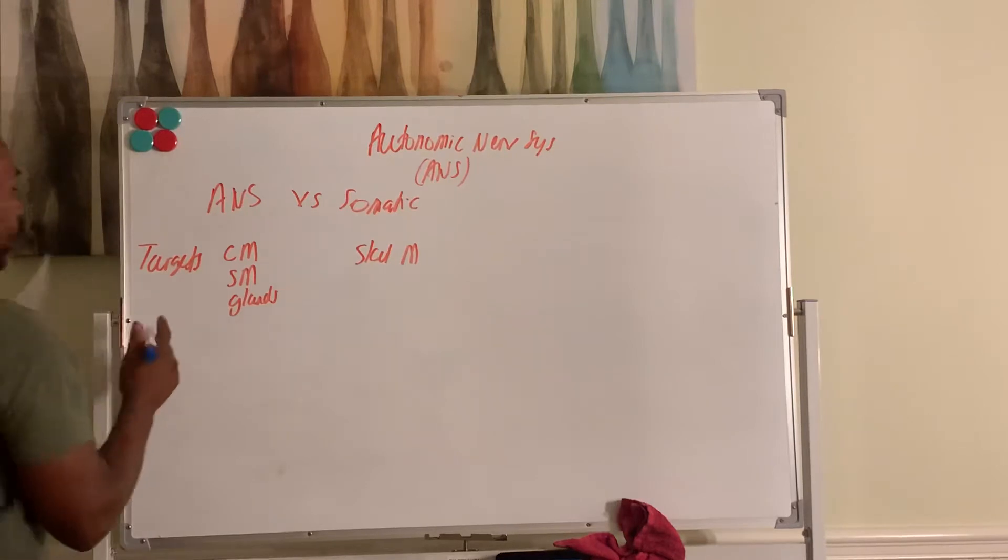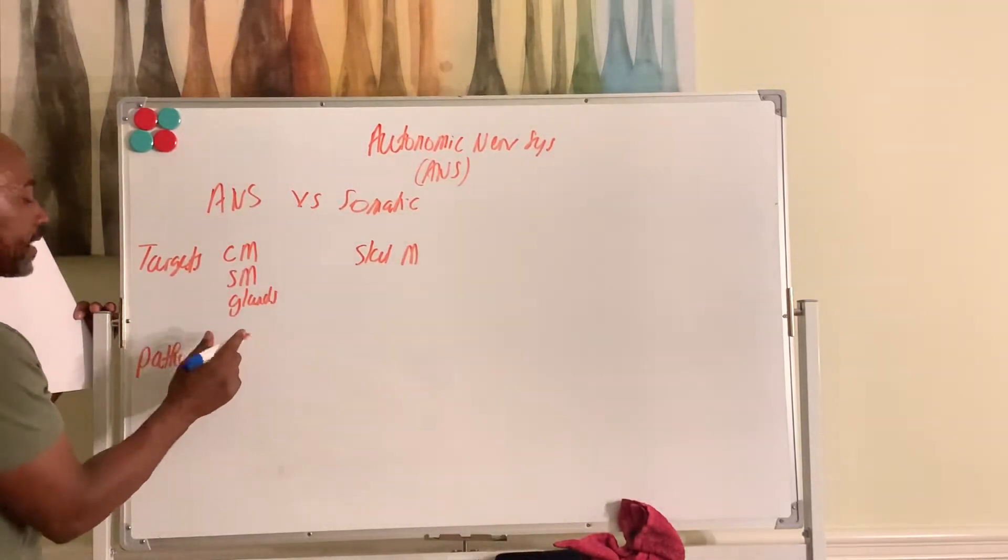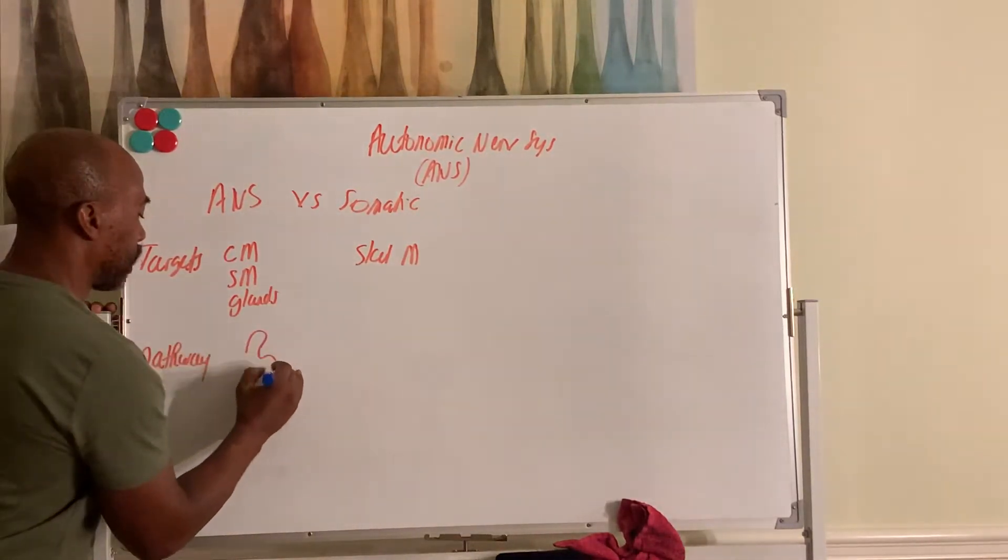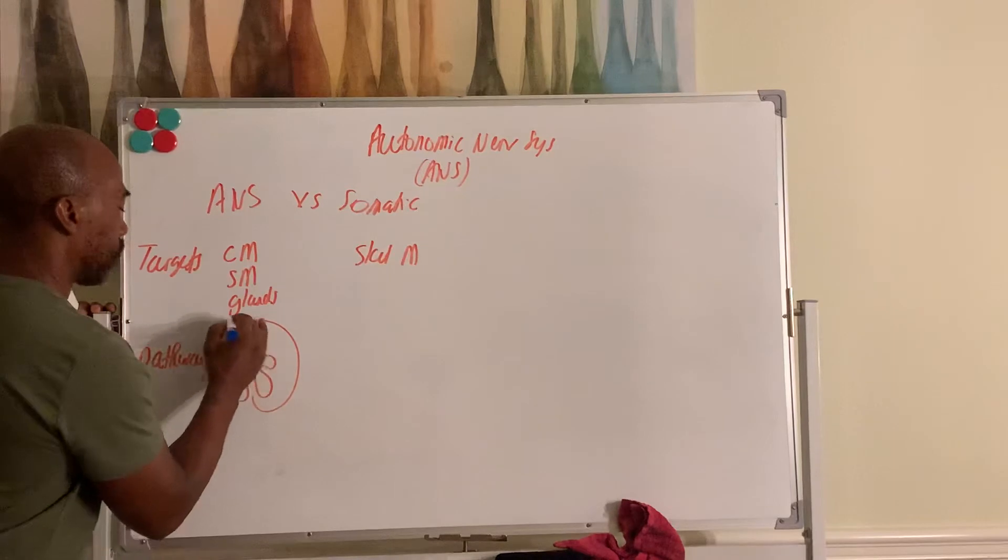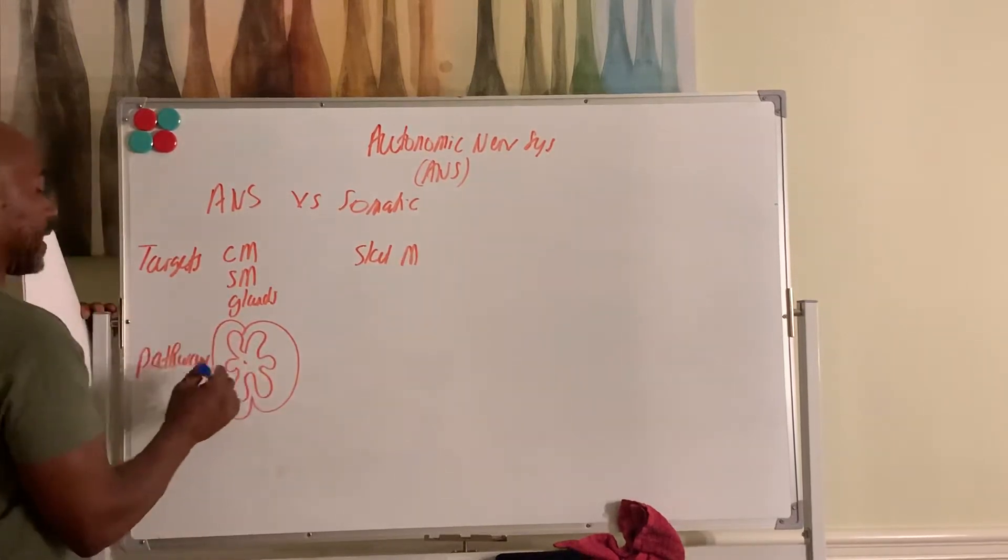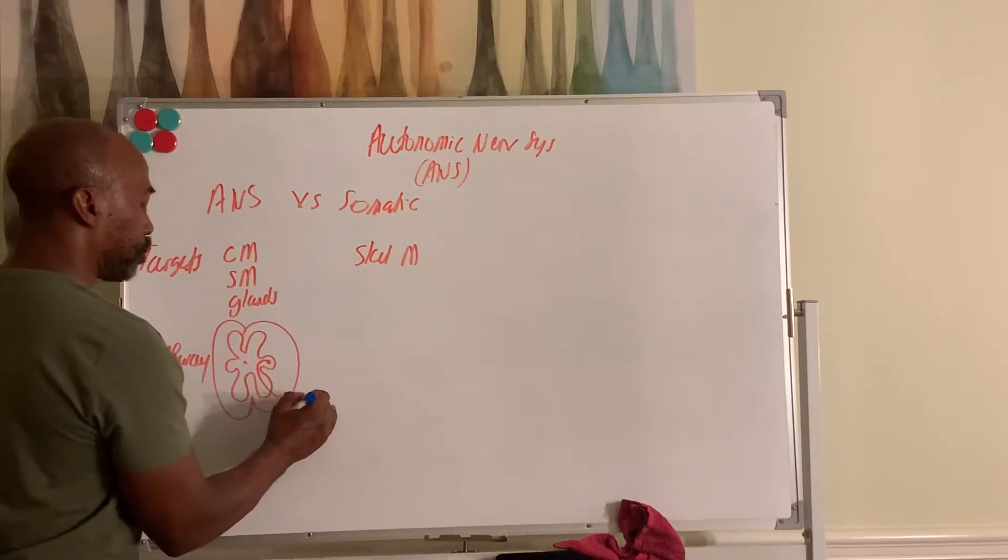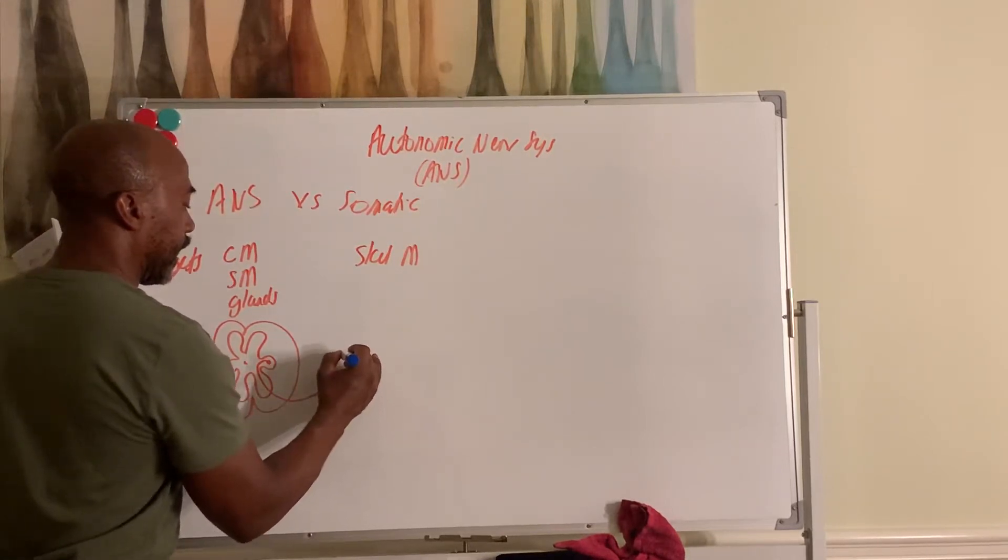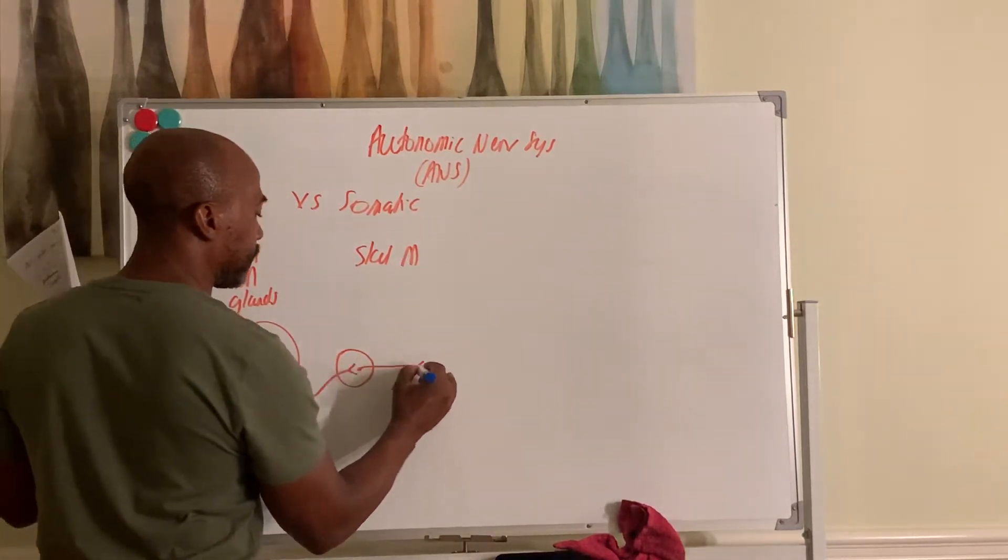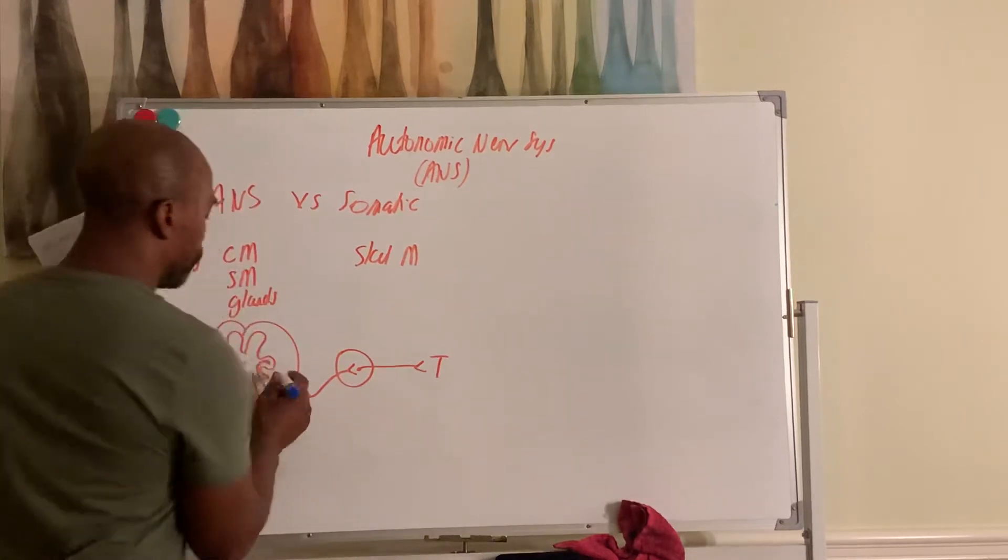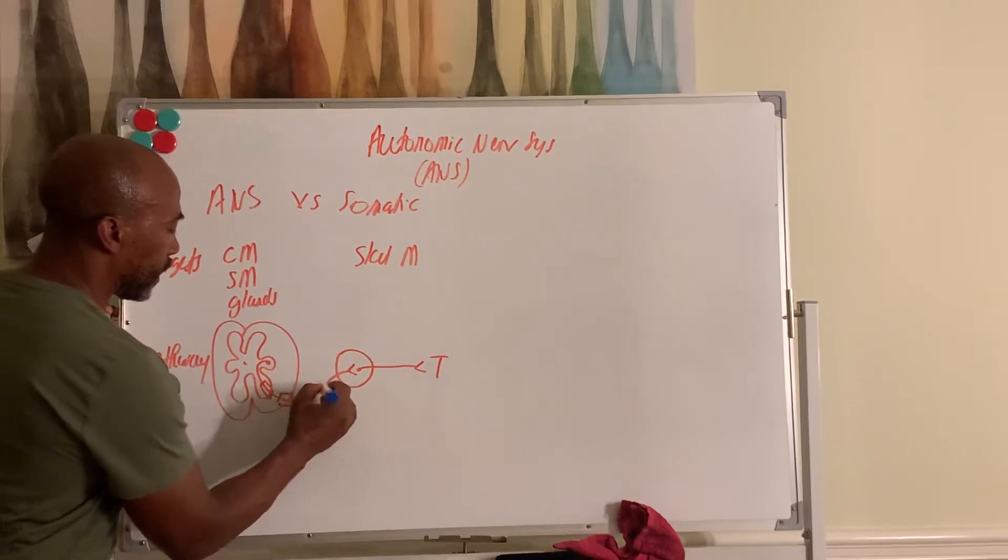Another thing we compared is how neurons get to the target. So for the ANS system, this is your spinal cord, right? In the ANS, you have one neuron leads from the lower horn, exits through the ventral root, and stops in a ganglia called the autonomic ganglia. And the second one goes out to target. And the first neuron, the pathway is myelinated. The second one is not.